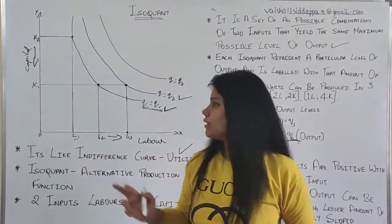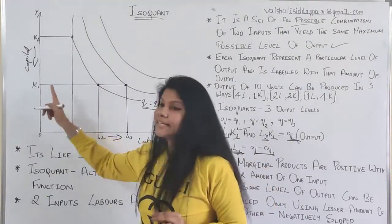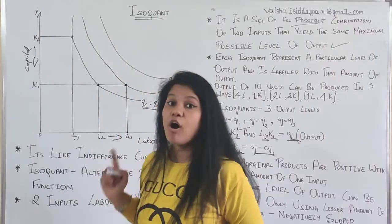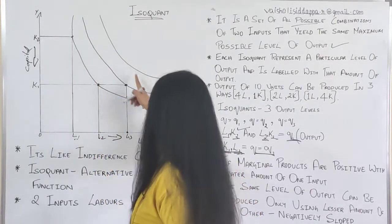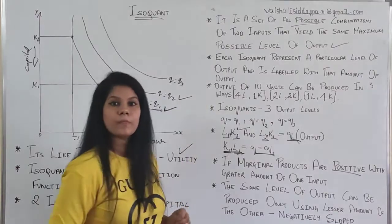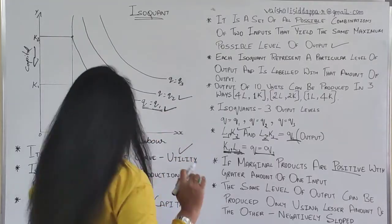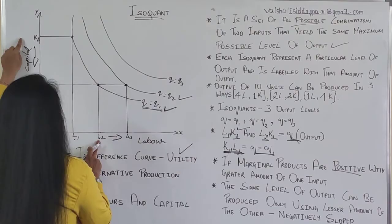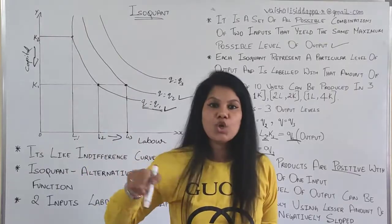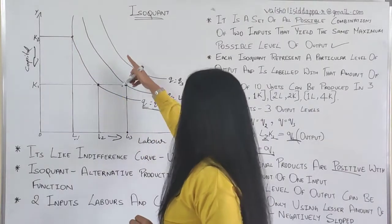The marginal production: if you are increasing both labor number and capital, if both are increasing, then the isoquant will be positive. But if the inputs are moving in the opposite direction — if capital is increasing, labor is decreasing, or if capital is decreasing, labor is increasing — then the isoquant will be negatively sloped. You can see here that the curves are negatively sloped.